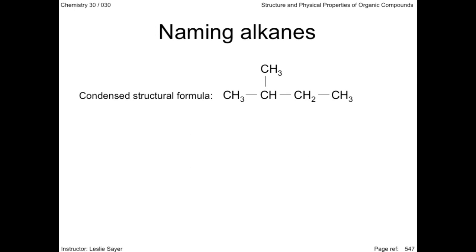We'll use this condensed structural formula as an example of naming alkanes. We already know that four carbons in a row makes this compound butane, but a side branch connected to the second carbon atom makes this compound not simply butane. Side branches, or substituent groups, or more commonly side groups, are attached to the longest chain of carbon atoms. Side groups based on alkanes are called alkyl groups, and they're the only type of side groups you'll have to deal with in this course.